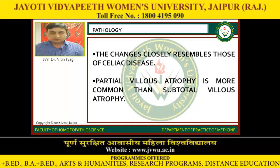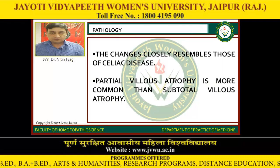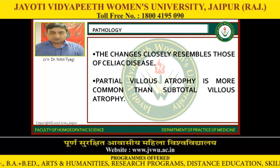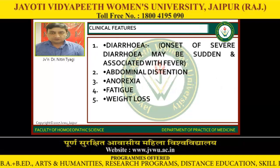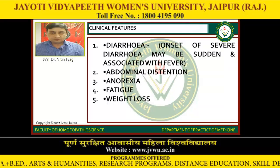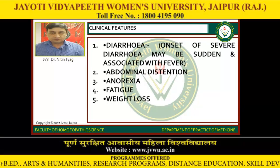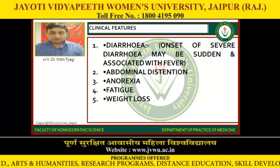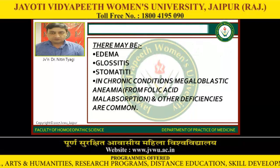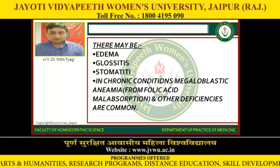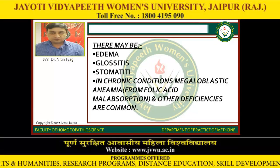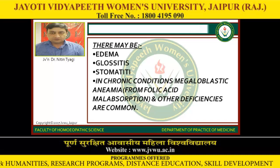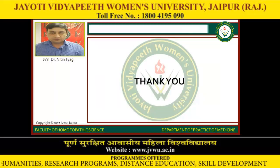Pathology: the changes closely resemble those of celiac disease. Partial villus atrophy is more common than subtotal villus atrophy. Clinical features: diarrhea — onset of severe diarrhea may be sudden and associated with fever. There is abdominal distension, anorexia, fatigue, and weight loss. There may be edema, glossitis, and stomatitis in chronic conditions. Megaloblastic anemia from folic acid malabsorption and other deficiencies are common. Thank you.